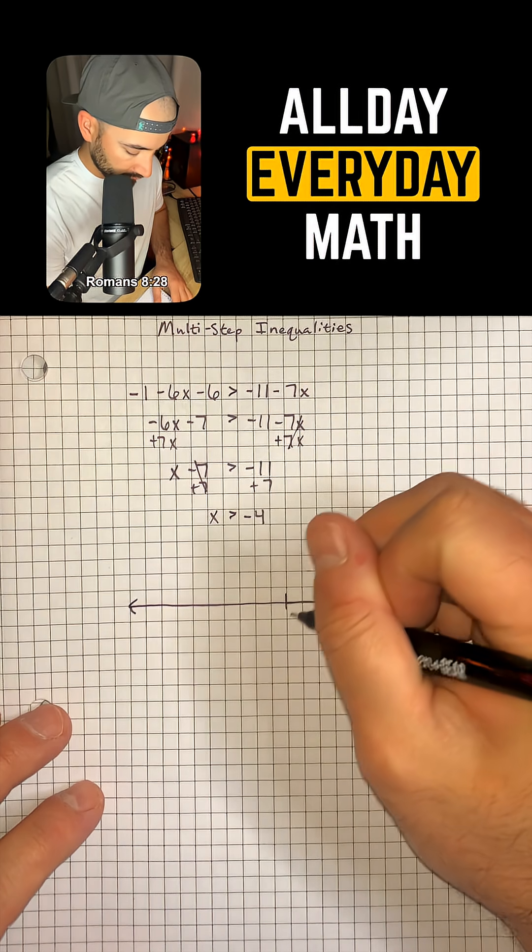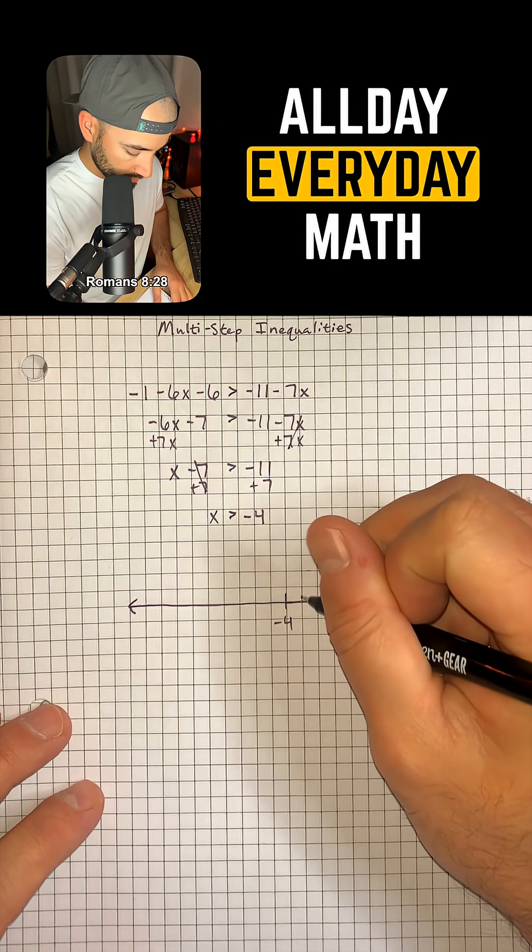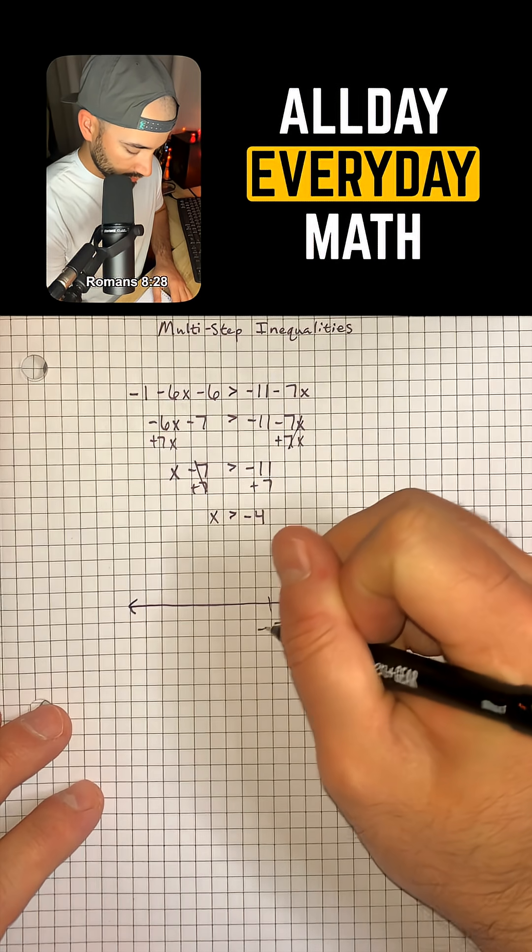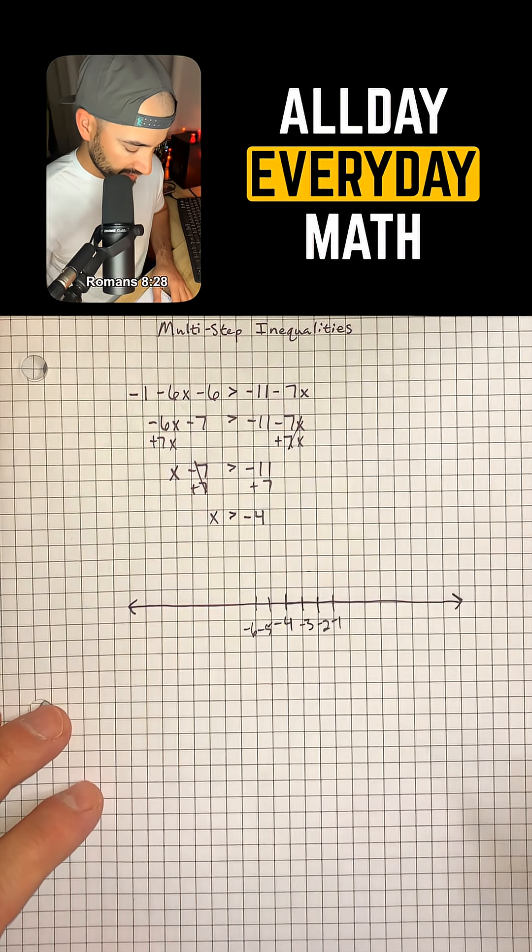So I'm going to put my negative 4 right here, and we'll have negative 3, negative 2, negative 1, negative 5, negative 6. That's good enough.